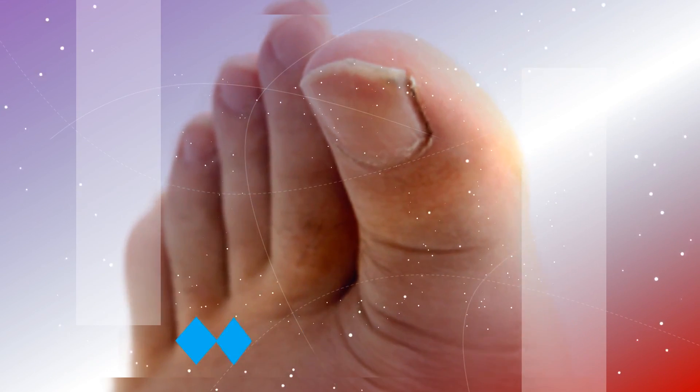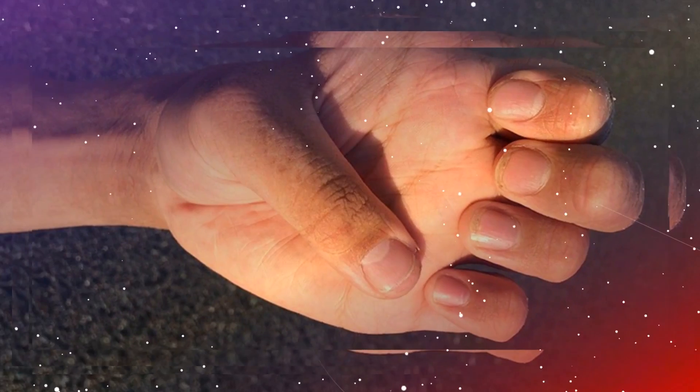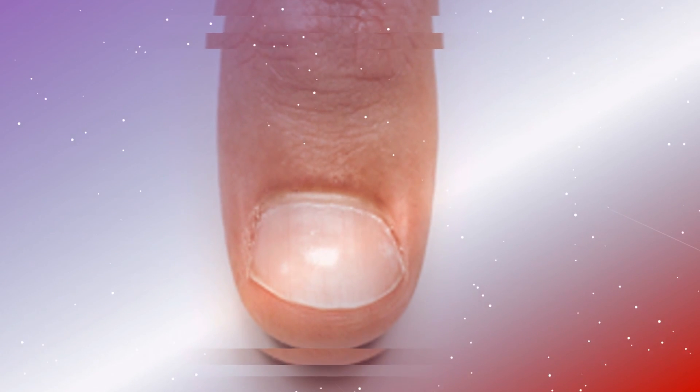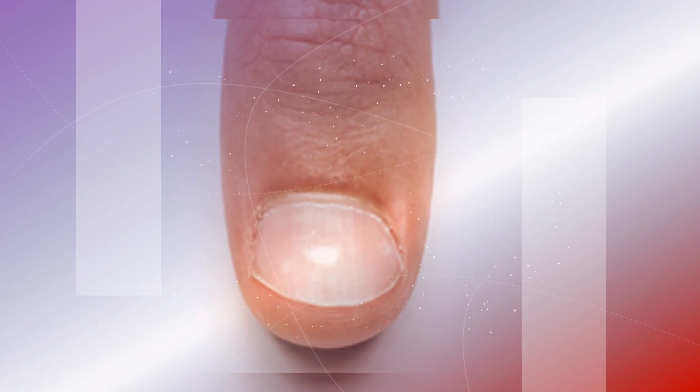7. Spoon Nails. These nails that curve upward at the edges, taking on a spoon-like appearance, may be a sign of iron deficiency anemia, hemochromatosis, excess iron absorption, heart disease, or hypothyroidism.